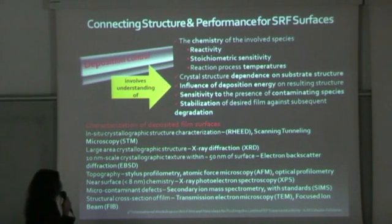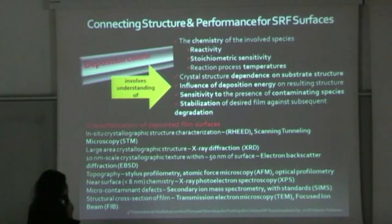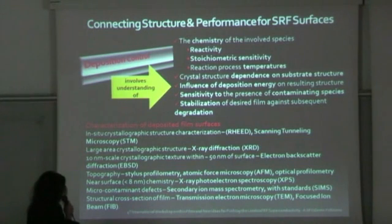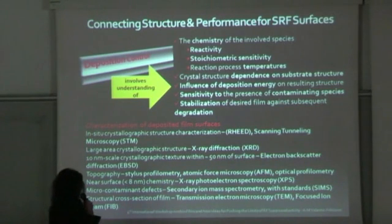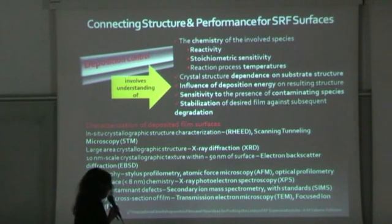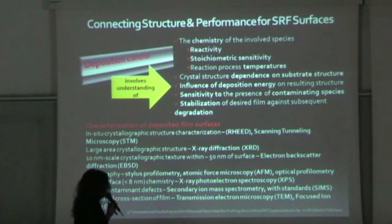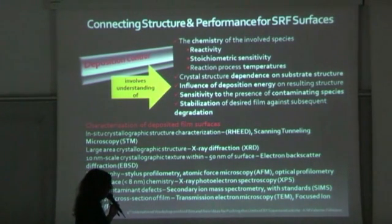For topography, we use stylus profilometry as well as AFM and optical profilometry. Down the line, we also look at the chemical composition of the surface as well as the bulk of the material with XPS and SIMS. For some of the more characteristic samples, we also perform structural cross-sections of the film and examine them with TEM or FIB — focused ion beam.